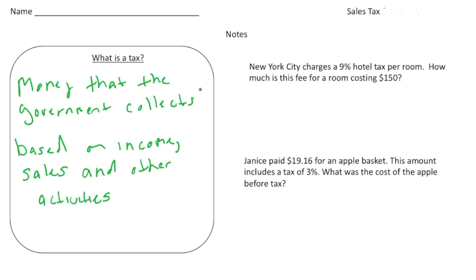All right, so I'm sure you've heard of the sales tax before and maybe some other types of taxes. So let's just jump into a couple problems here. So it says New York City charges a 9% hotel tax per room. How much is the fee for a room costing $150? So taxes are normally added right to the final bill. So the actual cost of this hotel room is going to be 9% more than $150.